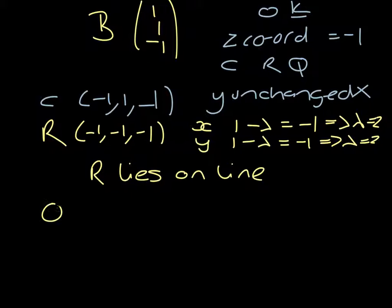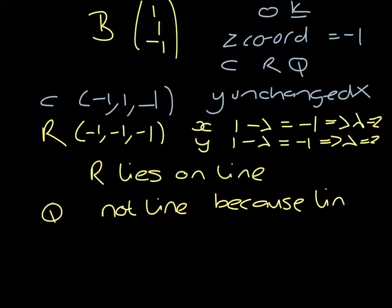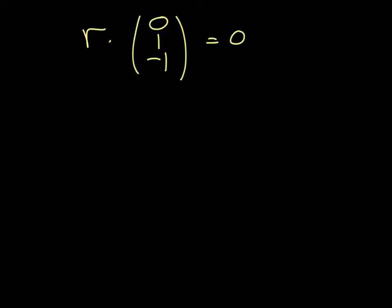And then finally, if we look at Q, I can say straight away it's not on the line. And that's because the line now we know is BR in direction. So if we rewrite this as Cartesian form, then 0x plus y minus z has to equal 0. So the y-coordinate has to equal the z-coordinate.